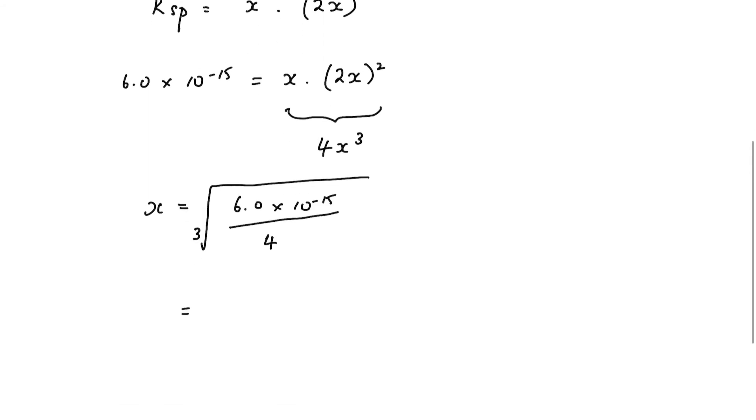And when you plug that into your calculator, the answer comes out at 1.14 times 10 to the minus 5 mole per decimeter cubed. So that is the solubility of iron(II) hydroxide.